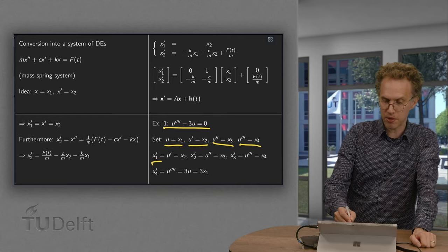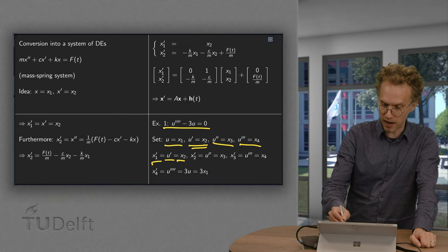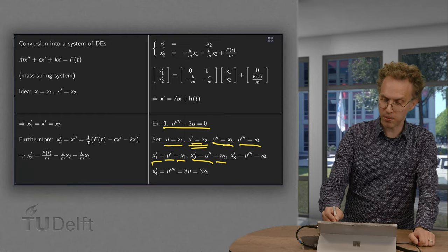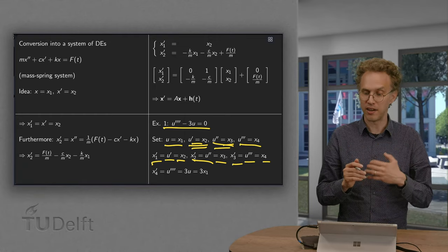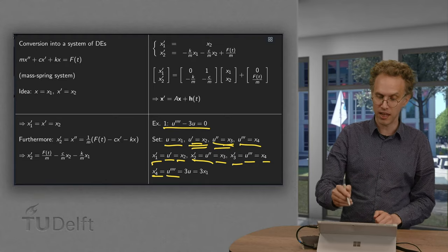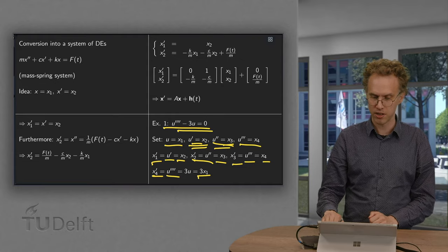Then x1 prime equals u prime. But u prime equals x2. x2 prime equals u double prime. But u double prime equals x3. And x3 prime equals u triple prime. But u triple prime equals x4. And then finally, x4 prime equals the fourth derivative of u equals, from the differential equation, 3 times u. So, it equals 3 times x1.